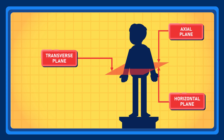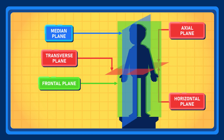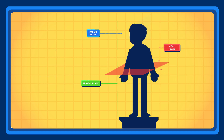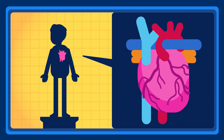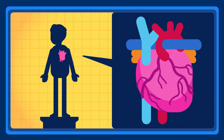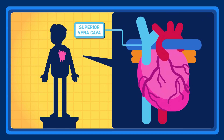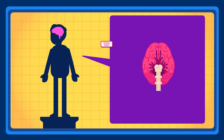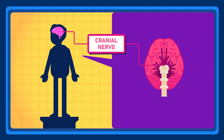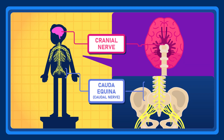Transverse planes. This plane runs horizontally and perpendicular to both the median and coronal planes. It divides the body into the upper and lower parts. Structures that are nearer to the upper end will be referred to as superior, while the structures that are positioned more towards the lower end are called inferior. We also can use cranial for structures near the top of the cranium or vertex, or caudal for structures near the leg.